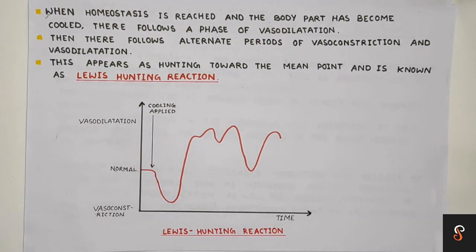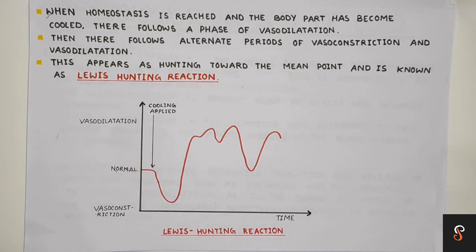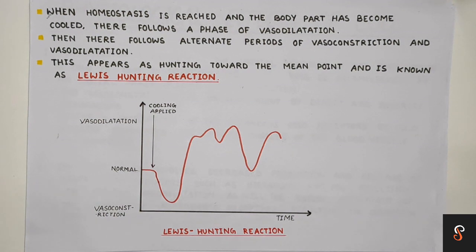When homeostasis is reached and the body part has become cooled, there follows a phase of vasodilatation. Homeostasis is the tendency to maintain a stable, relatively constant internal environment — the body maintains homeostasis in factors like temperature, pH, and glucose concentration. After this phase of vasodilatation, there is alternation of vasoconstriction and vasodilatation. This phenomenon of cold-induced vasodilatation after an episode of vasoconstriction was first reported by Lewis in 1930 and is known as the Lewis hunting reaction.